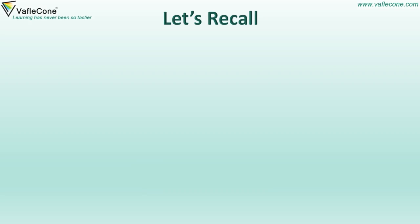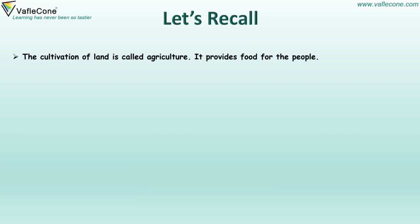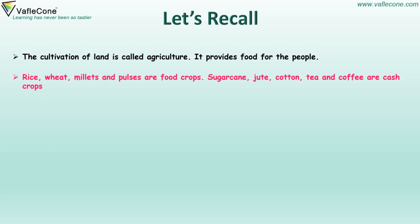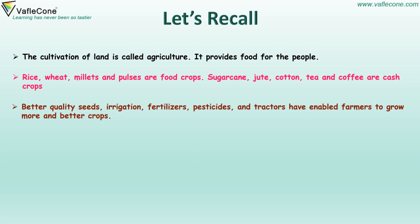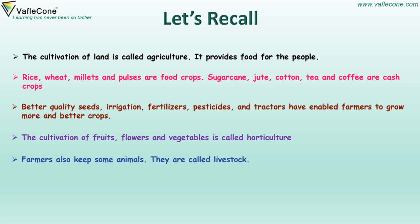Let's recall. The cultivation of land is called agriculture. It provides food for the people. Rice, wheat, millets and pulses are food crops. Sugar cane, jute, cotton, tea and coffee are cash crops. Better quality of seeds, irrigation, fertilizers, pesticides and tractors have enabled farmers to grow more and better crops. The cultivation of fruits, flowers and vegetables is called horticulture. Farmers also keep animals — they are called livestock. Both marine and inland fishing are popular in India.